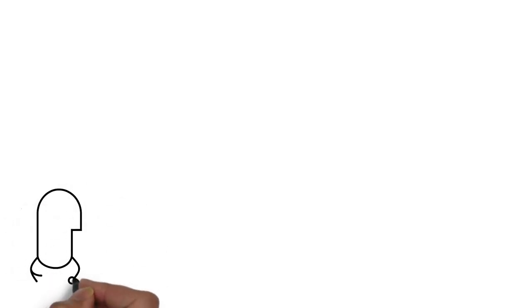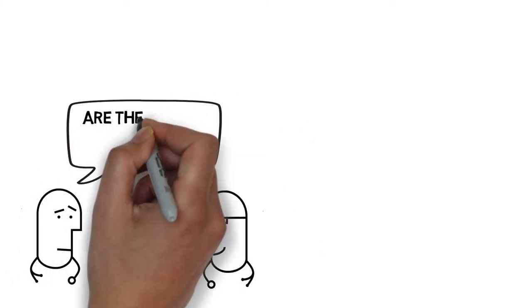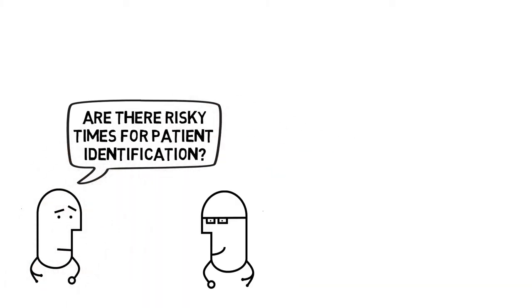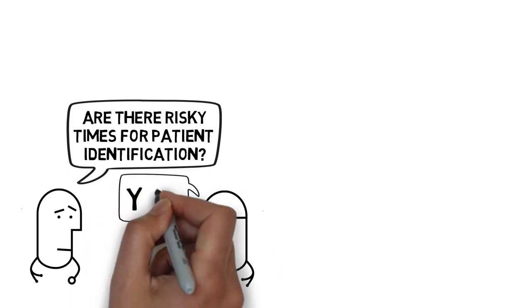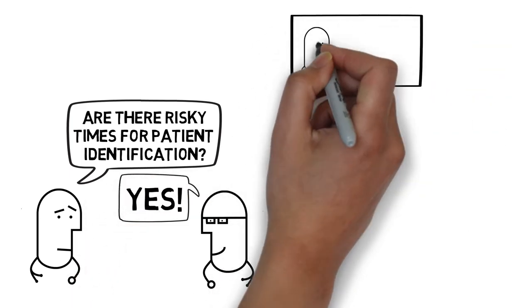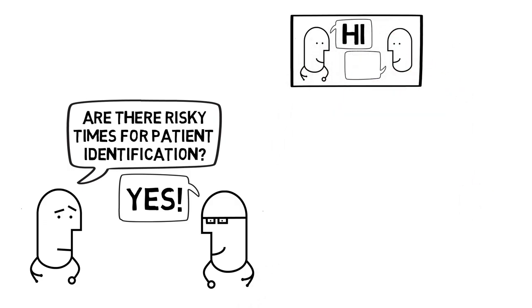Now that we know why proper patient identification is important and why we need two patient identifiers, you may be wondering when are the riskiest times for patient identification. As it turns out, there are at least four really risky times. The first risky time is when we are meeting a patient for the first time. Prior to that moment they could be anyone in the world, so it's important that we get proper patient identification correct right out of the gate.